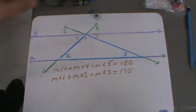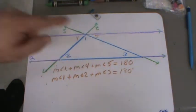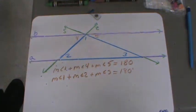So, this is proof that these three angles, the three interior angles of a triangle, are going to add up to 180 degrees.